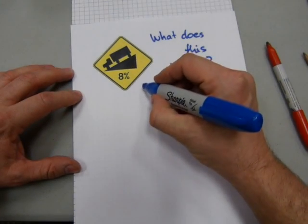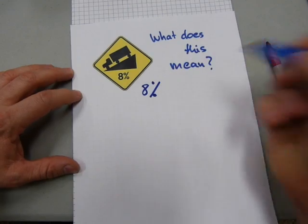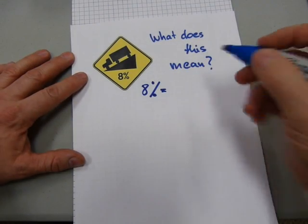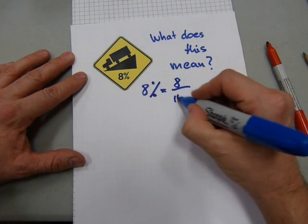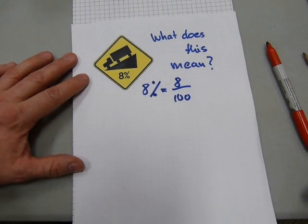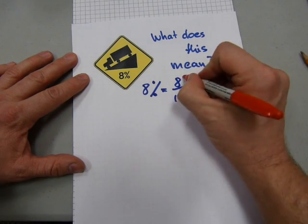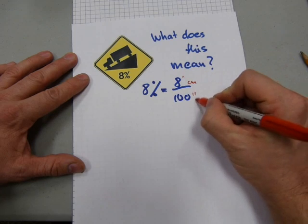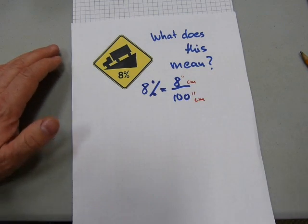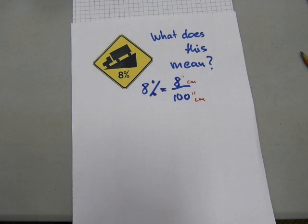In terms of math, this is what I have in mind. Eight percent, to make it into a fraction, means just eight out of a hundred. And it doesn't matter eight what. It could be eight inches over a hundred inches or eight centimeters over a hundred centimeters or eight miles over a hundred miles or eight millimeters over a hundred millimeters.